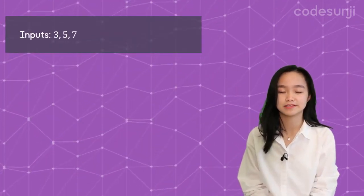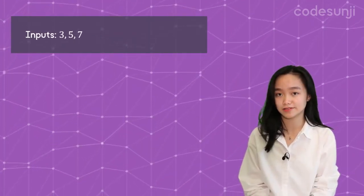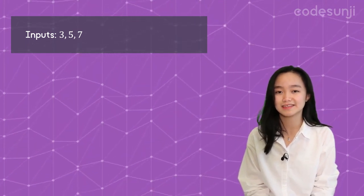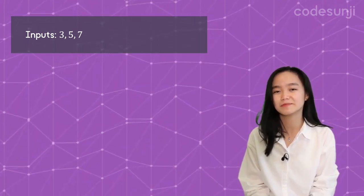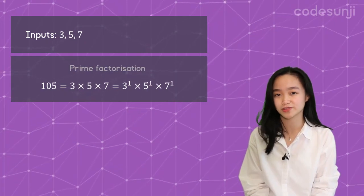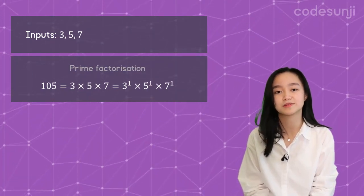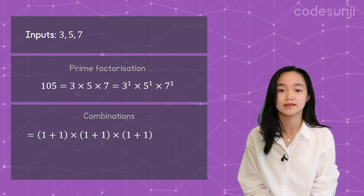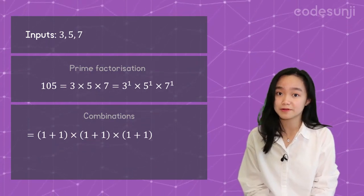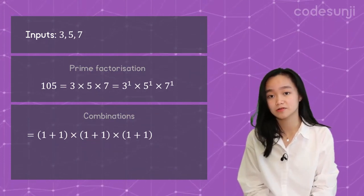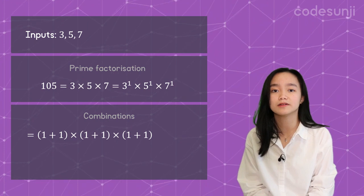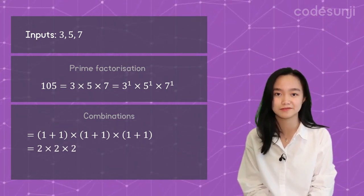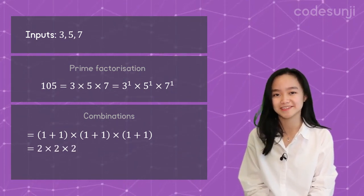Each prime factor can be raised to the power of 0 up to the number of times it appears. In this case each prime appears only once, so you only have two choices for the exponent of each prime factor: 0 or 1. We have three distinct prime factors, so the total number of distinct factors is 2 × 2 × 2, which is 8.